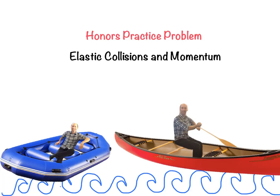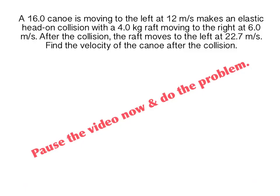This is an honors practice problem on elastic collisions and momentum. A 16 kilogram canoe is moving to the left at 12 meters per second, making an elastic head-on collision with a 4.0 kilogram raft moving to the right at 6.0 meters per second. After the collision, the raft moves to the left at 22.7 meters per second. Find the velocity of the canoe after the collision. Pause the video now and do the problem.